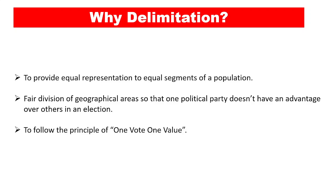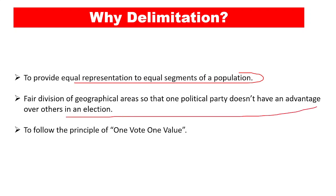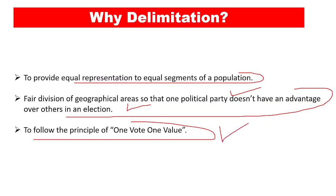Why is delimitation done? First, to provide equal representation to equal segments of a population. Second, for fair division of the geographical area so that one political party does not have any advantage over others in an election. Third, to follow the principle of one vote, one value.